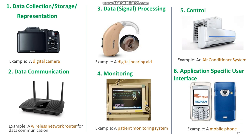The last purpose is application specific user interface. These are embedded systems with application specific user interfaces like buttons, switches, keypad, lights, bells, display units, etc. The mobile phone is the best example for this purpose — in a mobile phone, the user interface is provided through the keypad, graphic LCD module, system speaker, vibration alert, etc. So these are the six purposes of embedded systems. Thank you.